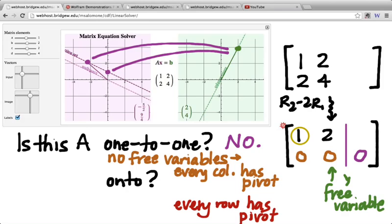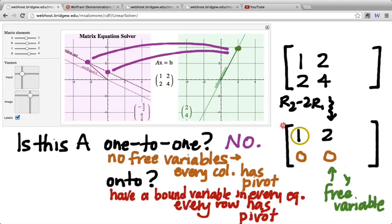And if it's ever possible for me to get something not 0 over here, then I'm going to get an inconsistent system. So the way to make a linear transformation onto is to guarantee that this can never happen. And the way to guarantee that this can never happen is to have a pivot in every row. Because if I have a pivot in every row, that means that I have a bound variable in every row. We need to have a bound variable in every equation. Maybe that's another way to say it. In every equation.